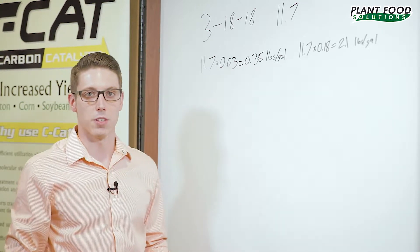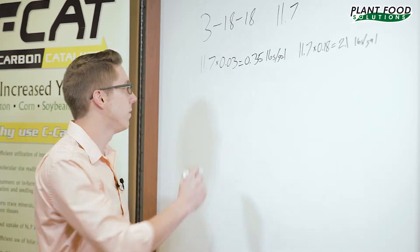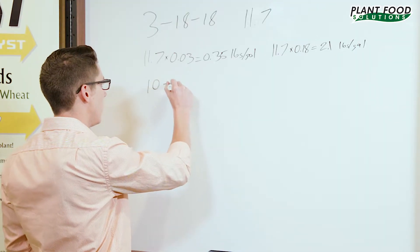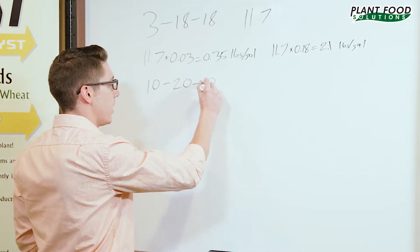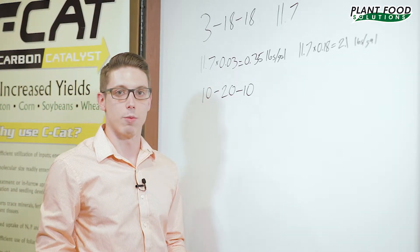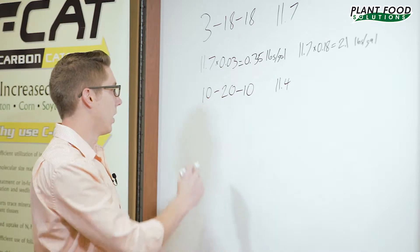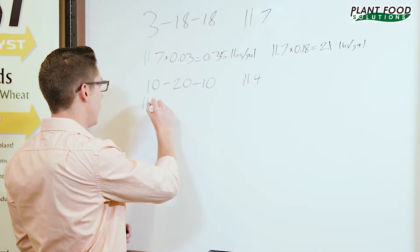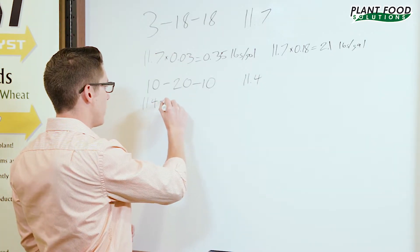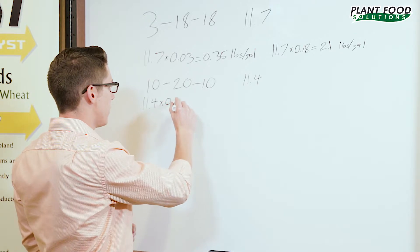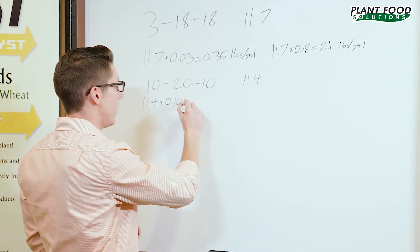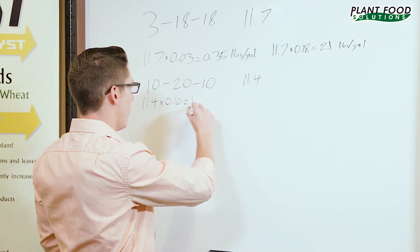We'll take another look at another analysis real quick, 10-20-10. 10-20-10 actually weighs 11.4 pounds a gallon. So you're going to take 11.4 times 0.1 since that 10 is a percent and come up with 1.14.